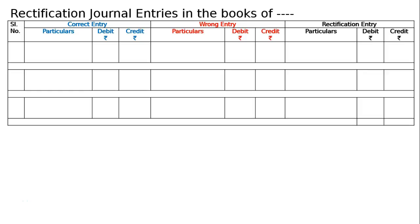In this question, rectify the following errors. The question is: rectify the following errors. Hence the correct entry — what should be the entry — the wrong entry, how this was mistaken and how this entry was passed in an incorrect manner, and the rectification entry — what entry should be passed to nullify the effect of a wrong entry and to bring down the correct entry.